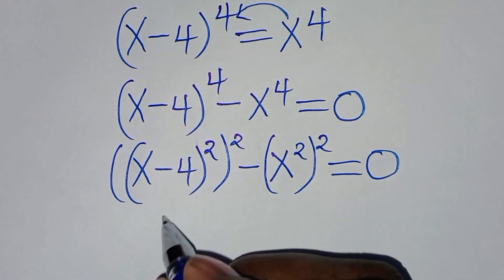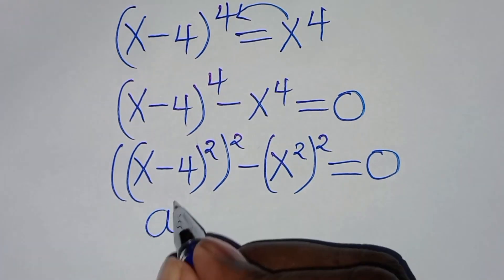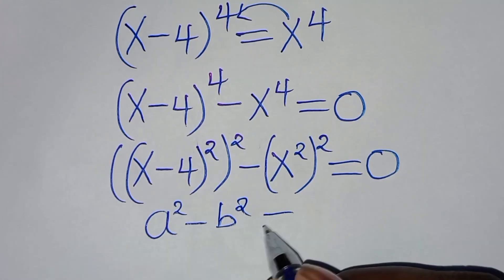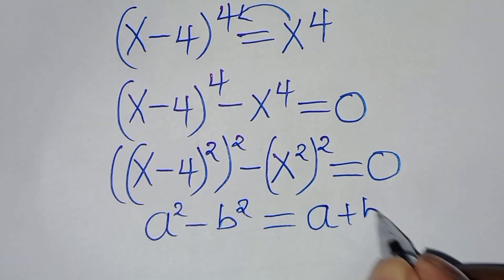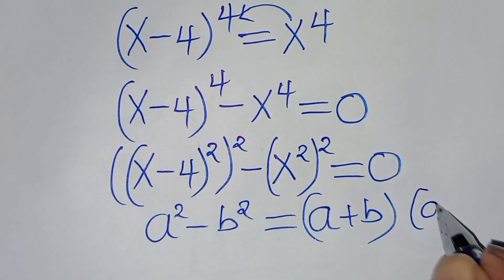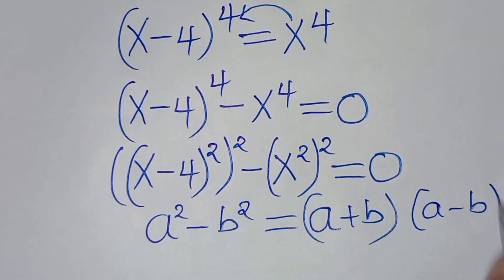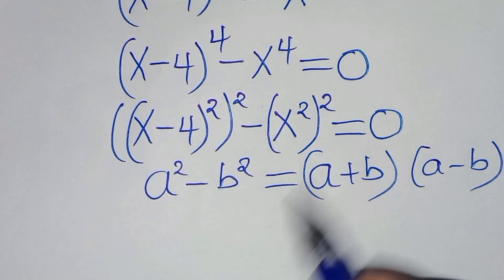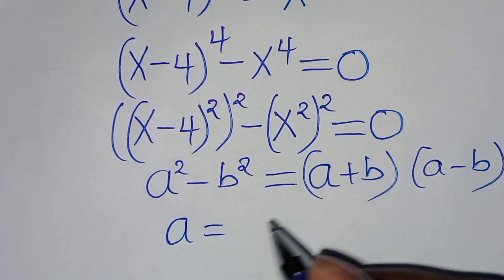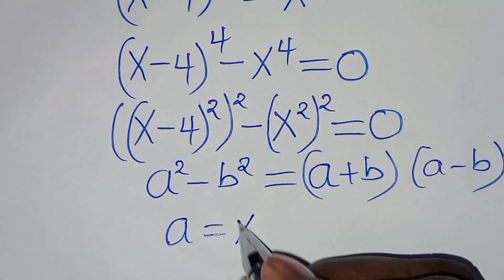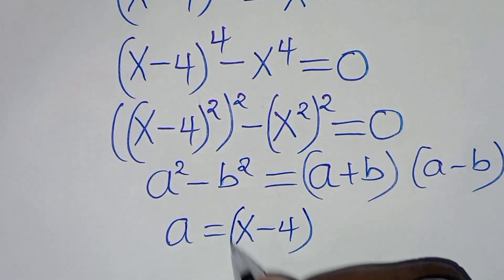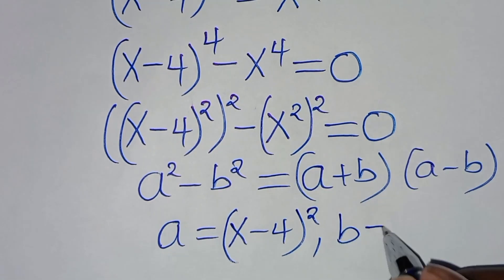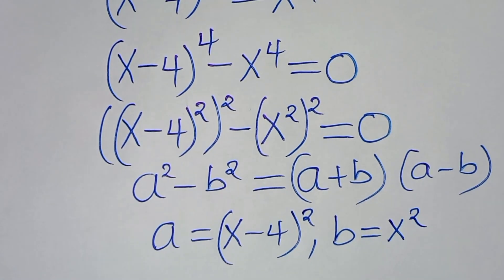This equation is in the form of a squared minus b squared, which we can express as a plus b, times a minus b. From this equation here, a is equal to x minus 4 raised to power 2, and b is equal to x to power 2.